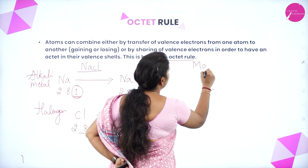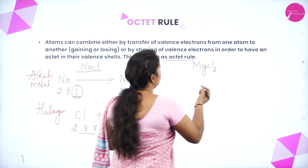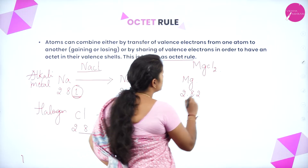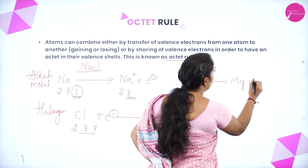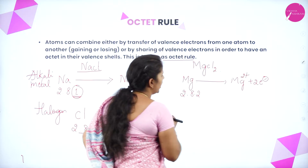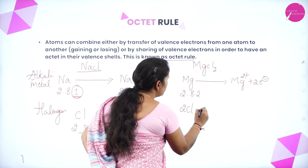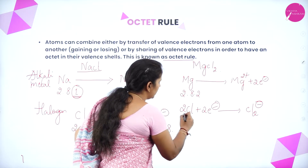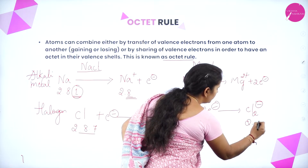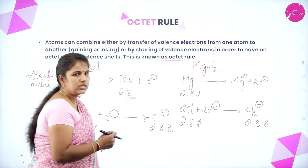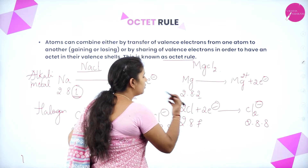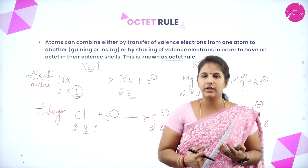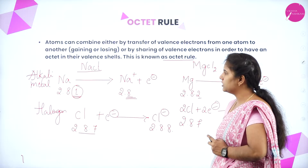Another example is magnesium chloride. Magnesium has configuration 2, 8, 2 with 12 electrons, so it loses 2 electrons and gets a plus-2 charge. Those 2 electrons are accepted by 2 chlorine atoms, forming Cl2 minus, and each chlorine goes from 2, 8, 7 to 2, 8, 8. This is how each element can lose or gain electrons to attain a stable electronic configuration as explained by the octet rule.